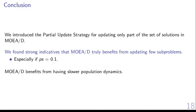In summary, this study shows that MOEA/D with a new partial update strategy results in better performance as we reduce the number of subproblems that MOEA/D updates at each iteration. This is especially true when the PS parameter value is equal to 0.1. This suggests that MOEA/D benefits from a slower population evolution.